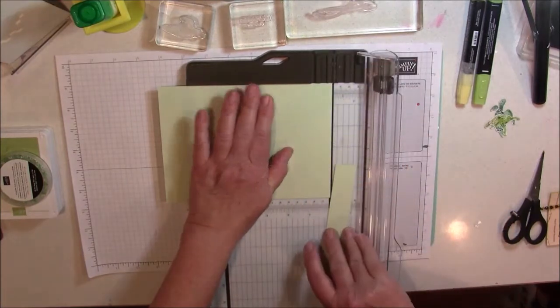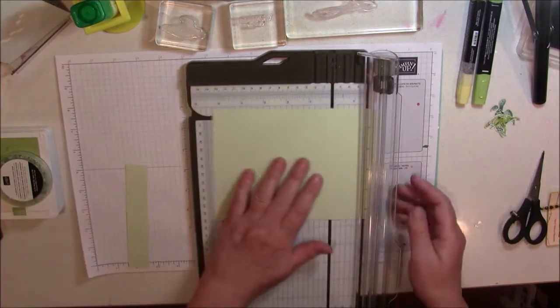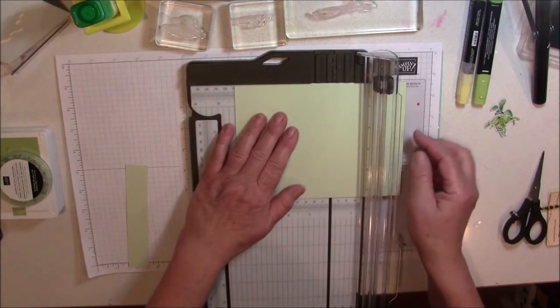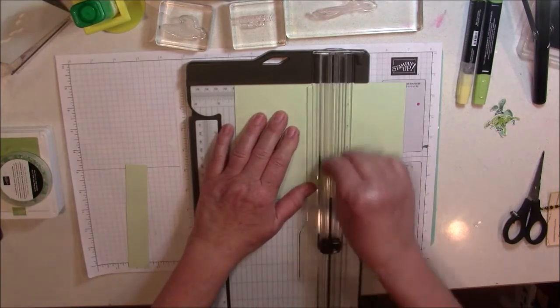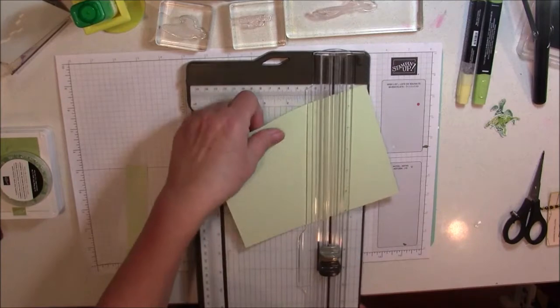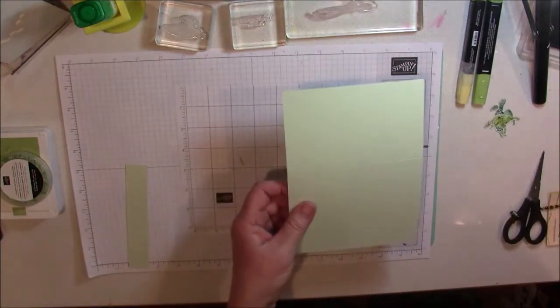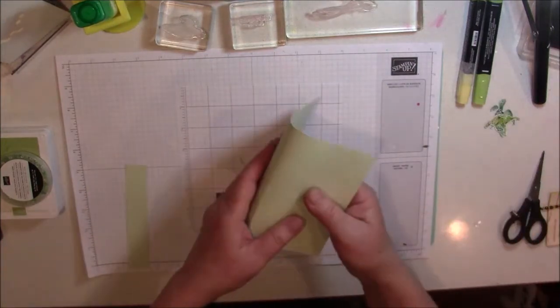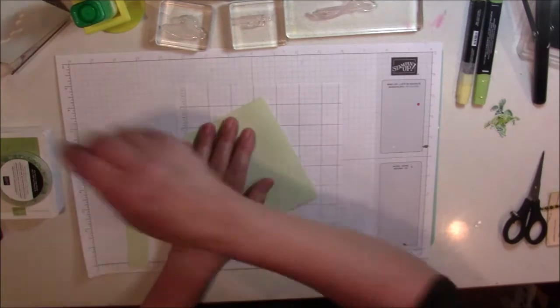Don't throw this piece away. We are going to use it. We are going to score it at 4.25 like a standard card. Then we are going to go ahead and fold and burnish our score line.